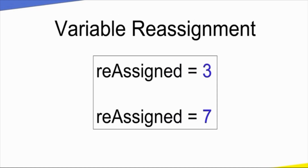Next, variable reassignment. First, we assign a variable name equal to a value. If we change the value, we use the same variable name and assign a new value. If we print the variable, it gives us the new value, such as 3. The old value is replaced.